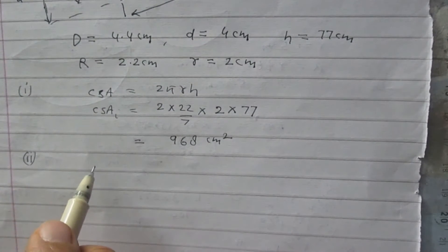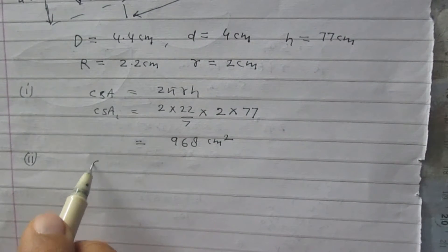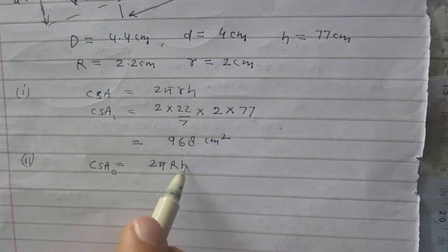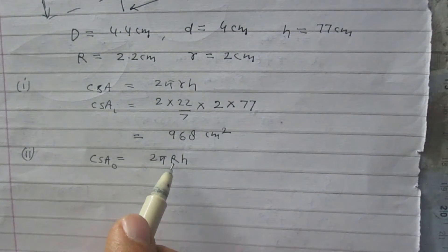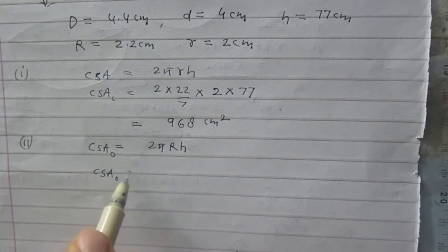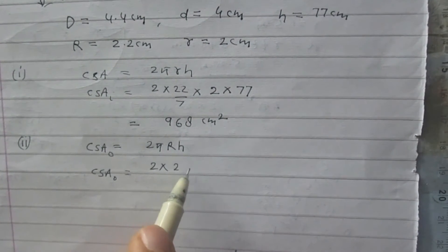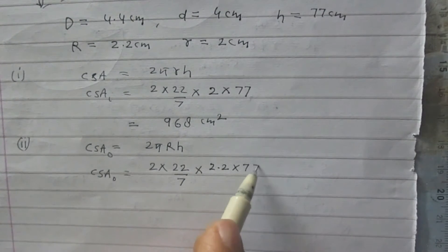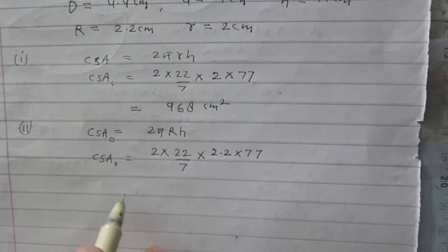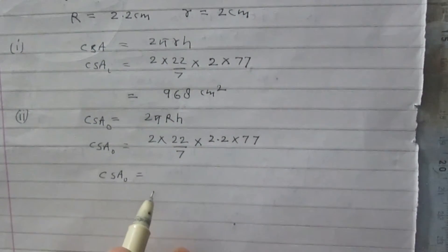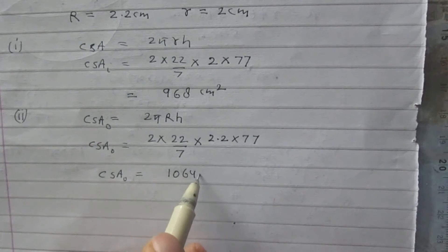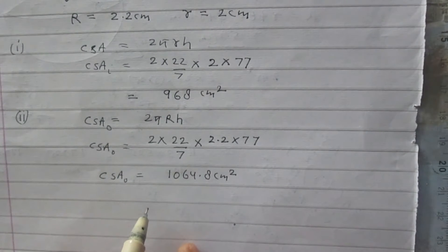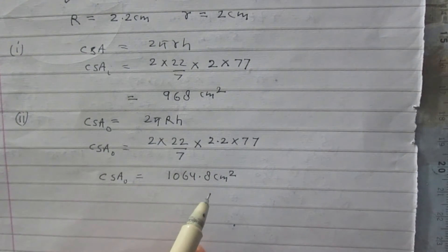Second, we are to find the outer curved surface area using the same formula 2πrh, where r stands for the outer radius. The outer curved surface area is 2 × (22/7) × 2.2 × 77. After calculation, you will find that it is 1064.8 cm². So the outer curved surface area of this pipe is 1064.8 cm².